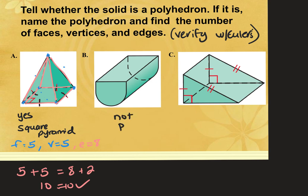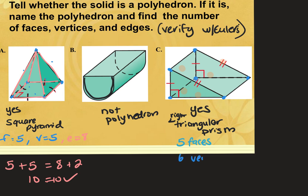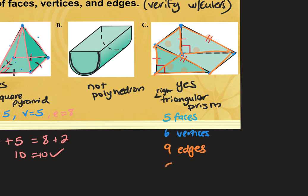B is not a polyhedron because of its curved sides. C is a polyhedron — it's a triangular prism, specifically a right triangular prism since the base is a right triangle. It has 5 faces (front, back, left, bottom, diagonal), 6 vertices, and 9 edges. Verifying: 5 + 6 = 9 + 2, and 11 equals 11.